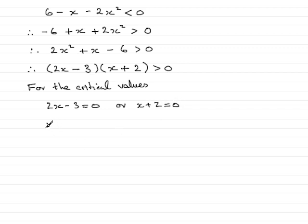And if we solve each of these by adding 3 to both sides here and then dividing by 2, we get x equals 3 over 2, that's 1 and a half. Or in this case subtract 2 from both sides and we end up with x equals minus 2.